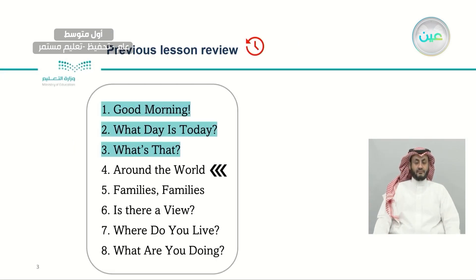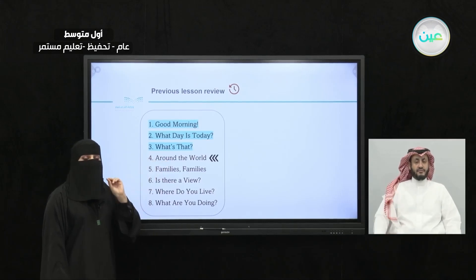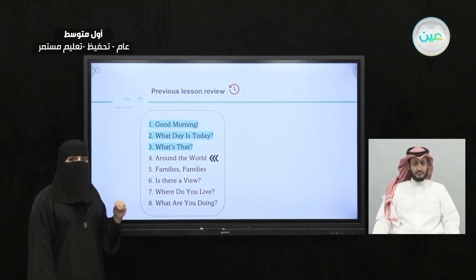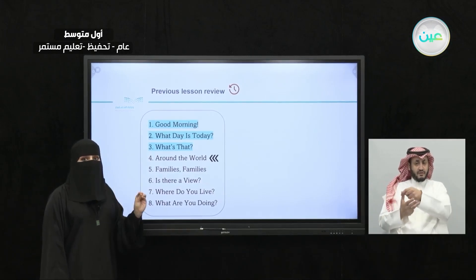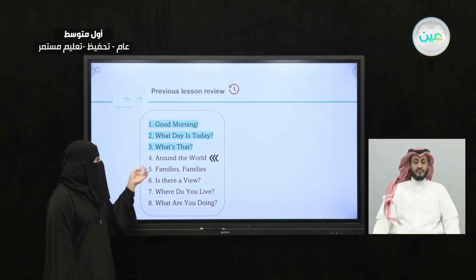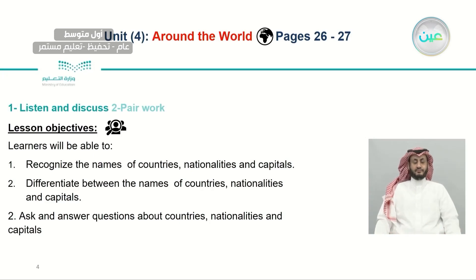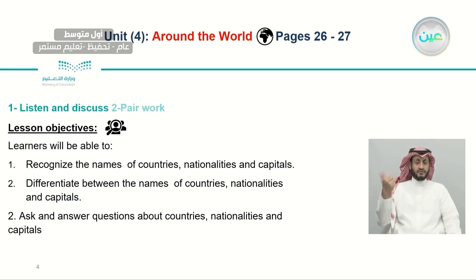In our lesson today, we will start a new unit — Unit Four, Around the World. We have eight units in the book, and each unit will have its own theme. Within that theme, we are going to learn the four English core skills: reading, listening, writing, and speaking, and more, like pronunciation. Our lesson today is Listen and Discuss plus Pair Work, page 26-27. Open your book.